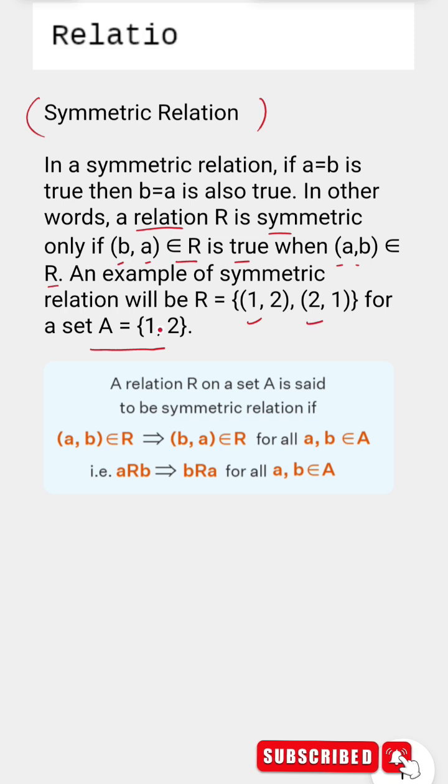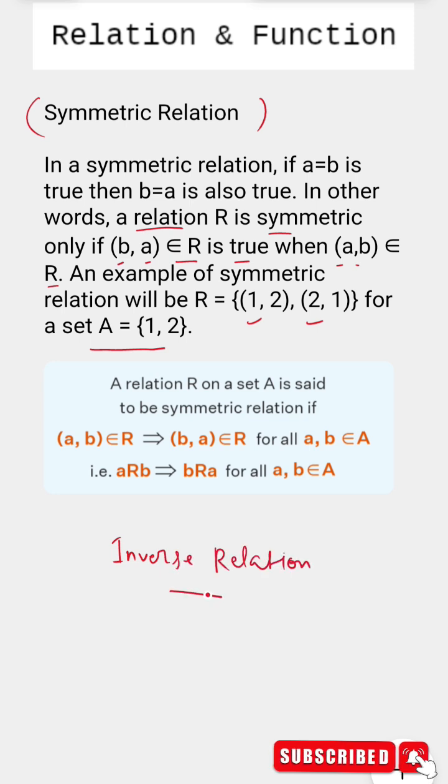If this is the situation, then this particular relation will be known as symmetric relation. And also at times symmetric relation is also compared with the inverse relation. Now both are of course totally different, but as of now, if the particular relation contains two ordered pairs 1 comma 2 and 2 comma 1, if the set contains two elements 1 and 2, then this particular relation is known as symmetric relation.